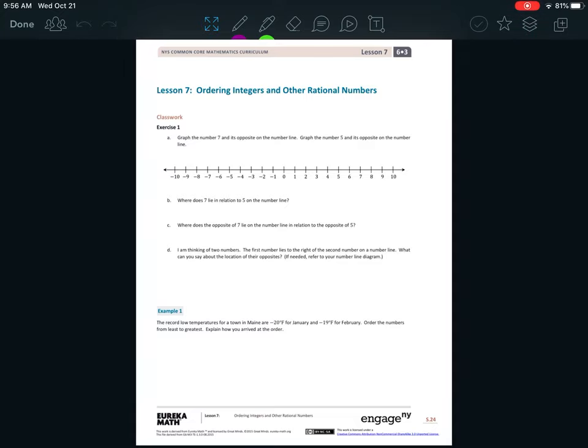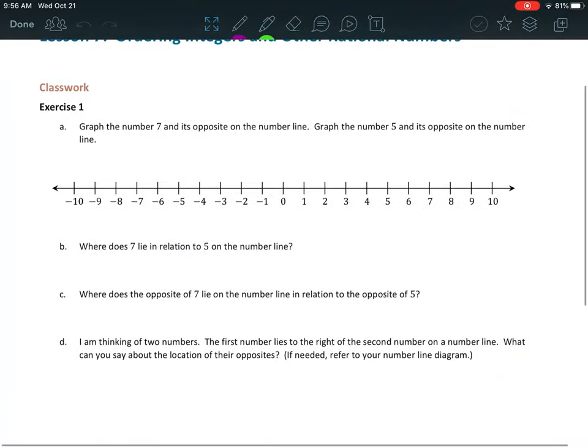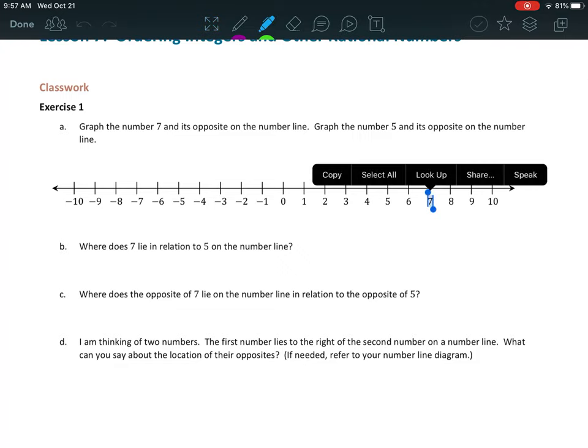All right, lesson 7. Graph the number 7 and its opposite on the number line. Graph the number 5 and its opposite on the number line.